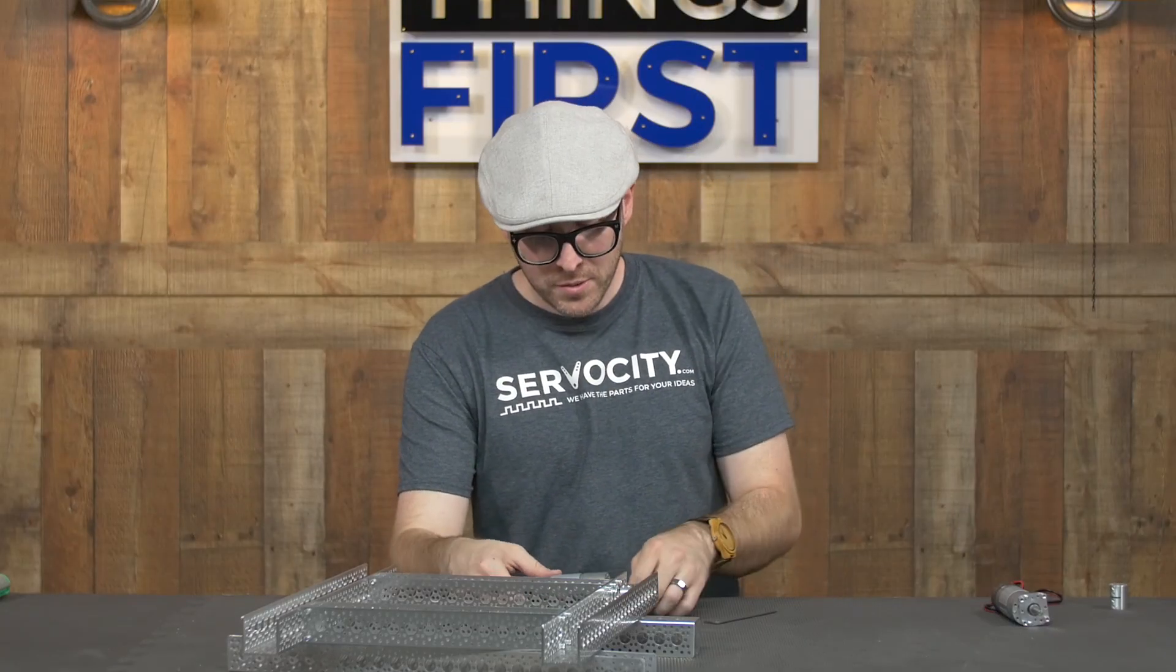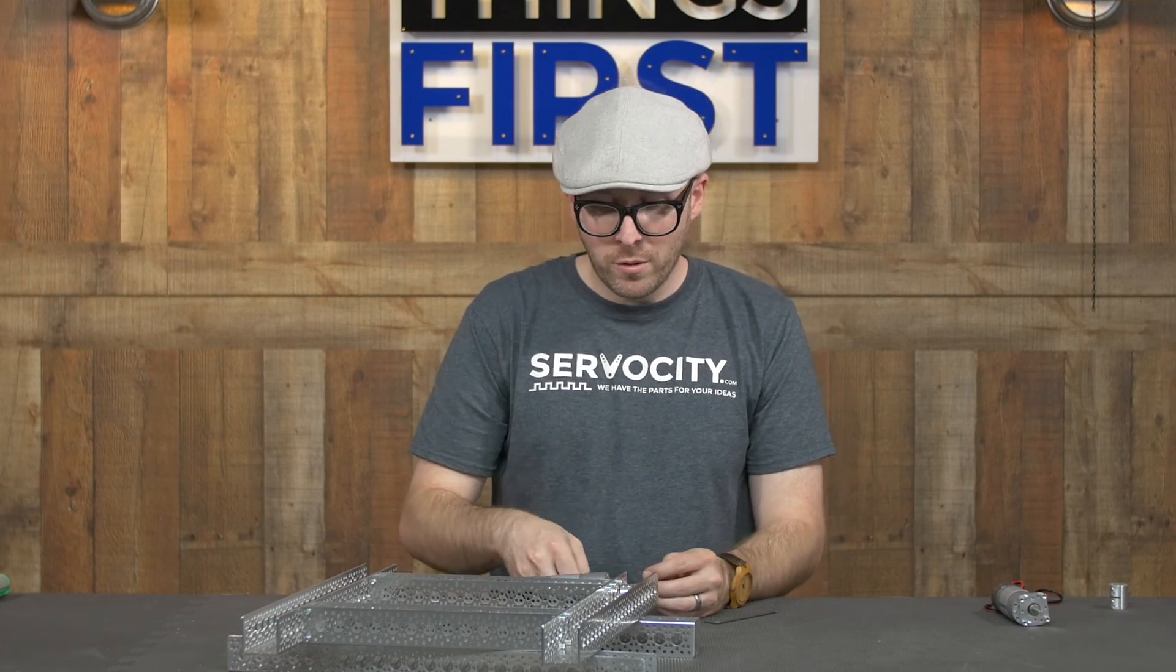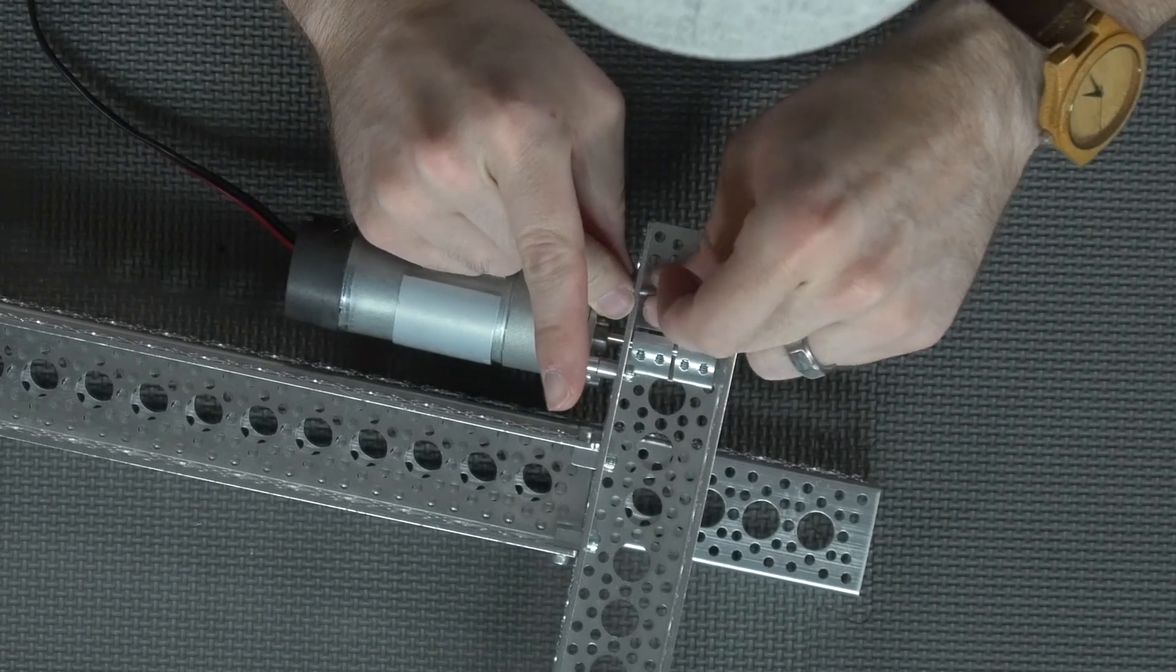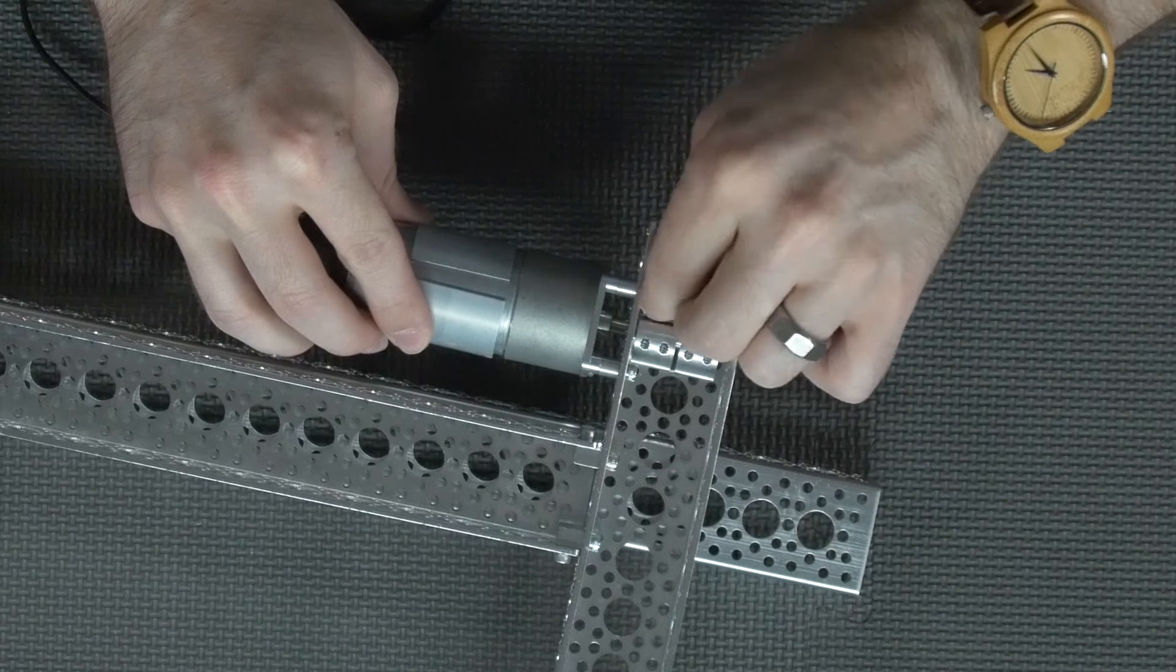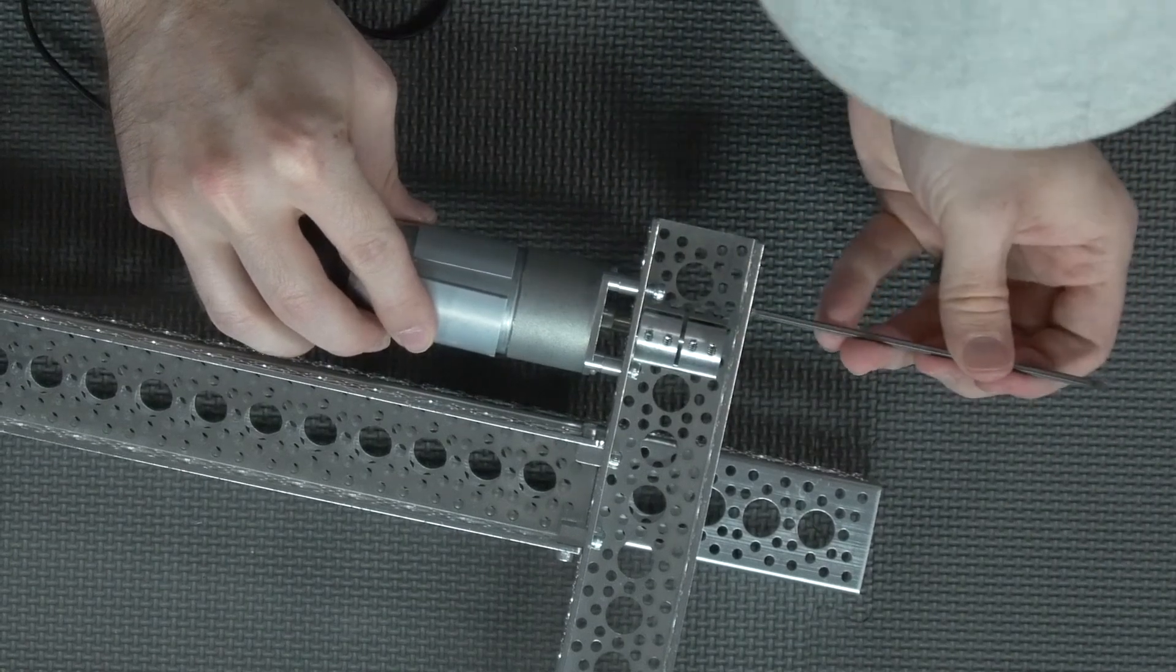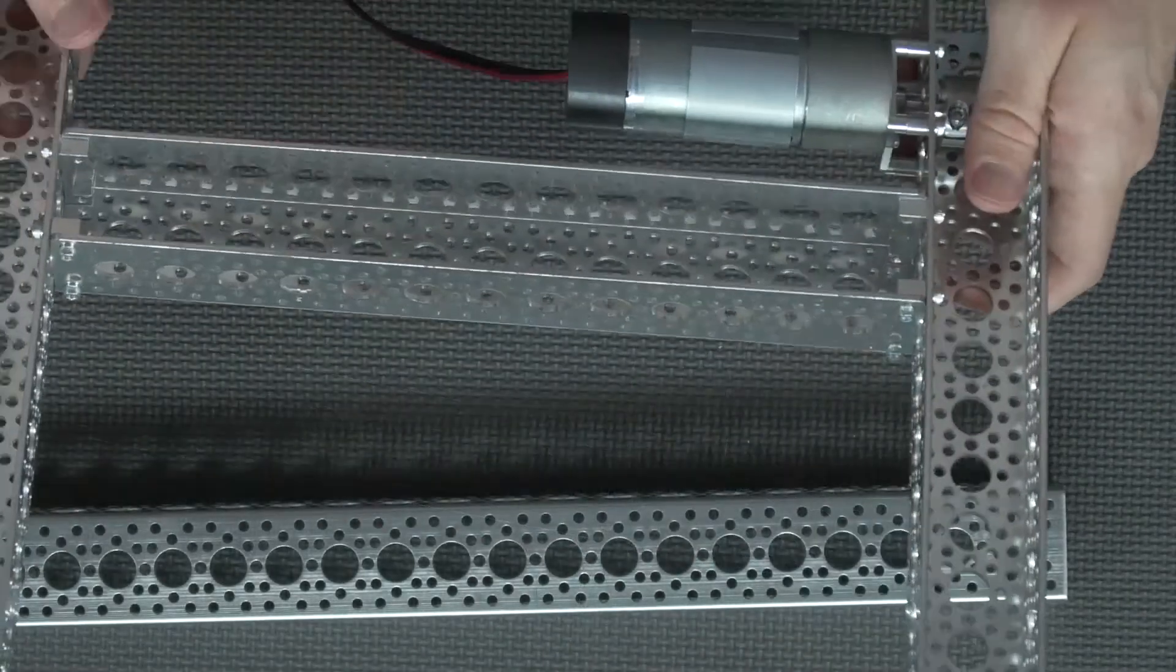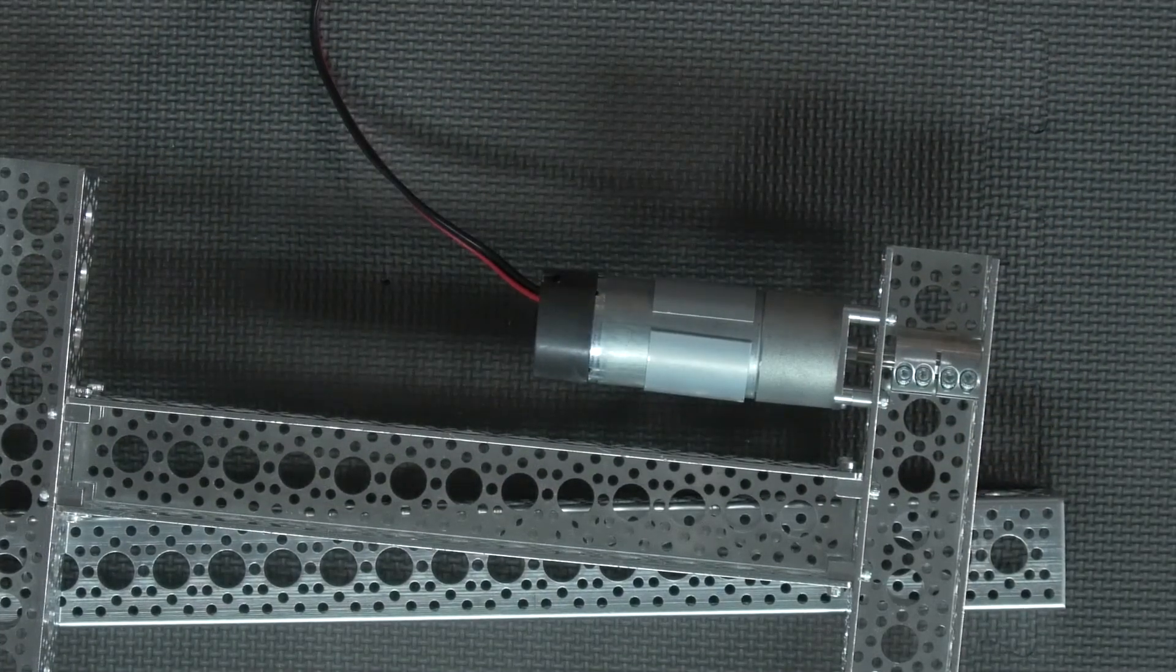I'm going to keep these screws fairly loose as I go to allow me plenty of wiggle room so that I can get these other spacers in easily. Then like usual, we'll tighten it all down once all the screws are in place. Now that I have the first motor mounted, I'm going to mount the other one the exact same way.